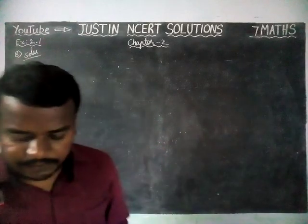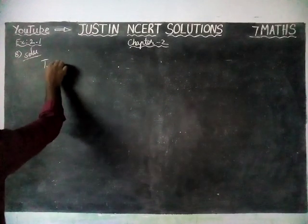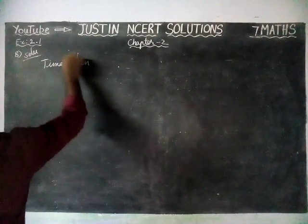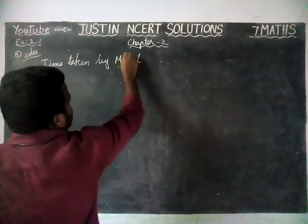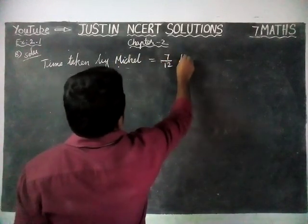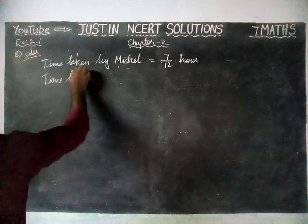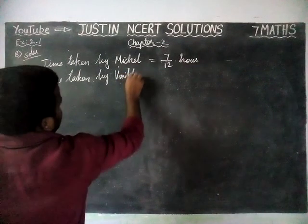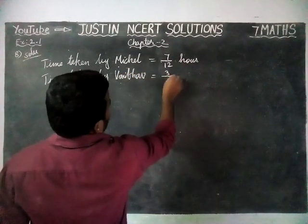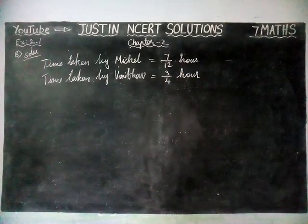In this sum, Michael finished coloring a picture in 7/12 hours. Vibov finished coloring the same picture in 3/4 hours. Time taken by Michael is 7/12 hours, time taken by Vibov is 3/4 hours. Now they asked us to find who took longer time and by how much.